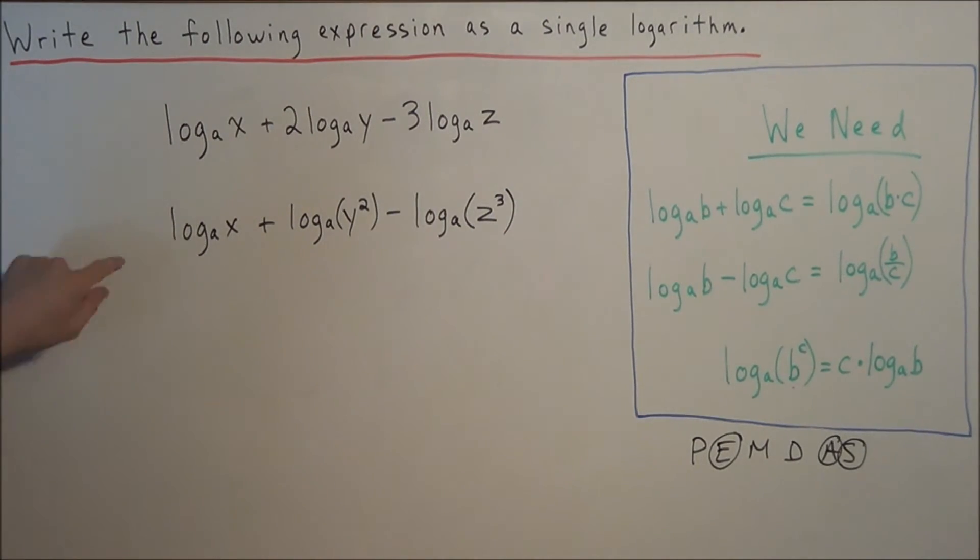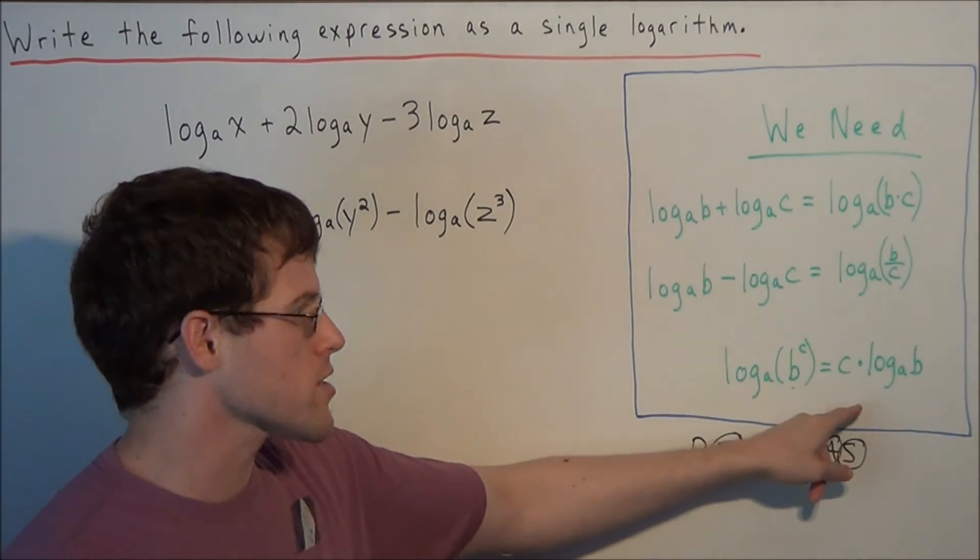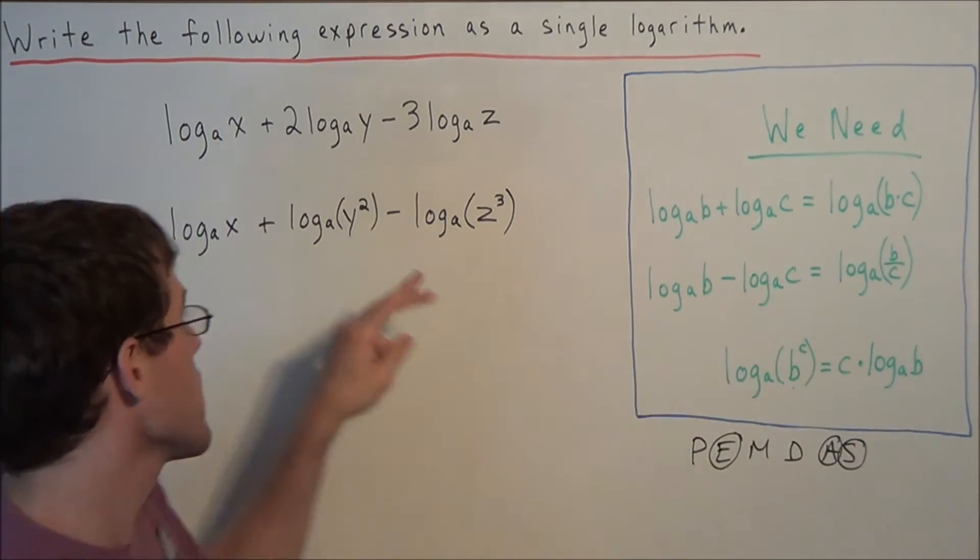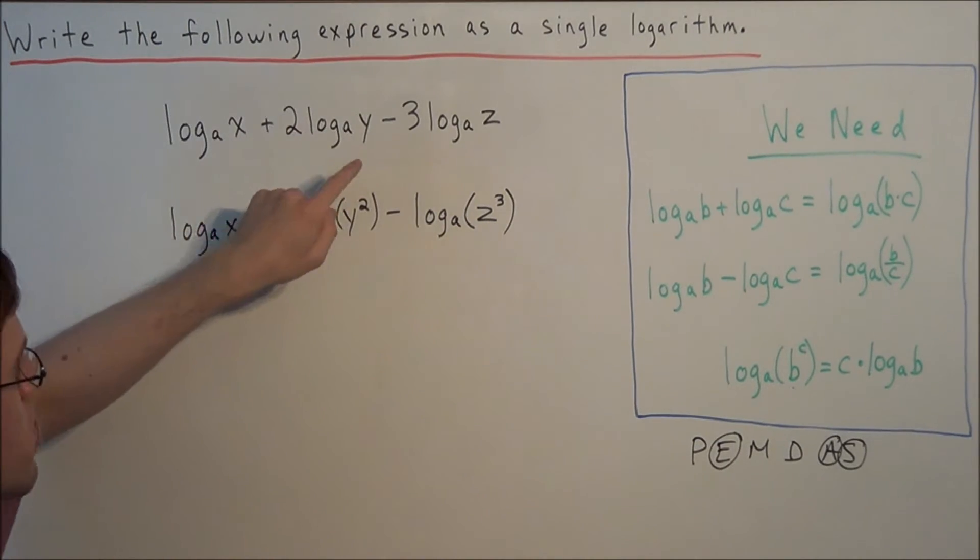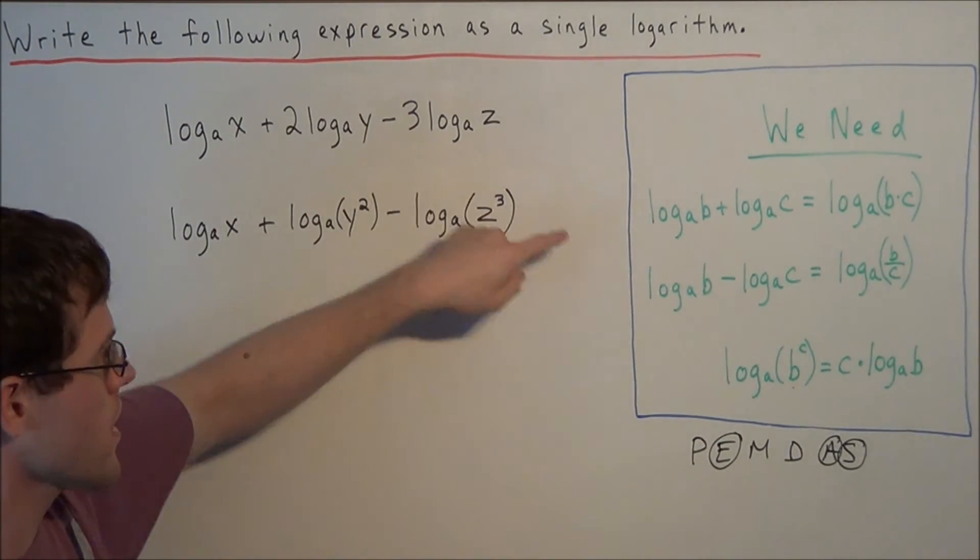So notice all we did from this line to the next was use the exponent of logs property twice to the second piece and the third piece. That 2 went back in as an exponent of y. This 3 went back in as an exponent of z.